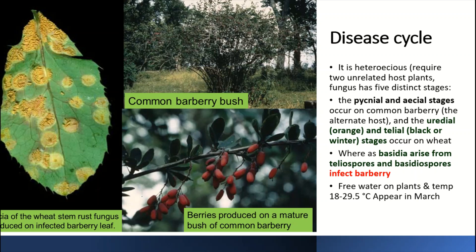The uredial and telial stages arise on wheat plants from urediniospores and basidiospores, which infect barberry plants. Free water on plants and a temperature of 18 to 29 degrees centigrade are very important for disease development. This disease appears in March in Pakistan and India.